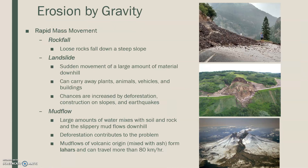Rapid mass movement is a little bit different — it's also caused by gravity, but it happens very suddenly. The first type is a rock fall: loose rocks fall down a steep slope, whether that's a hill or a mountain. It can be triggered by an earthquake or a multitude of reasons, and the rocks literally slide down the slope. The second type is a landslide — it's not just rocks moving, but literally the whole side of some structure giving way. It's the sudden movement of a large amount of material downhill, and it can carry with it plants, animals, vehicles, and buildings — anything in its path goes with it.